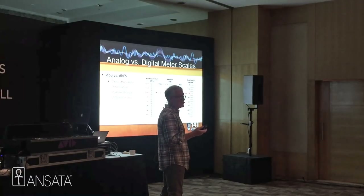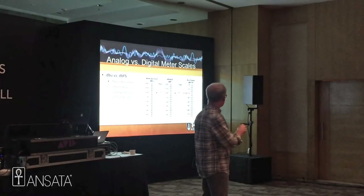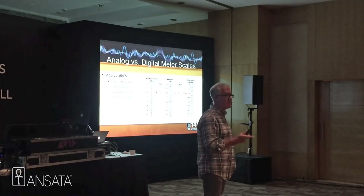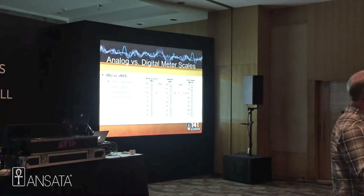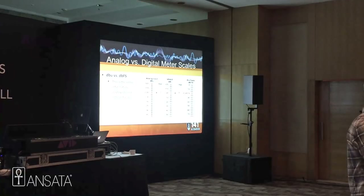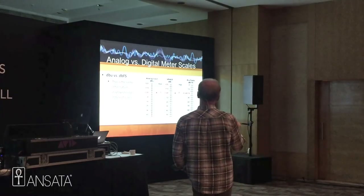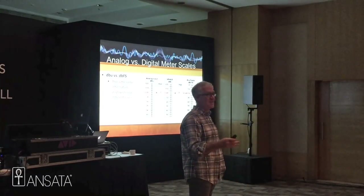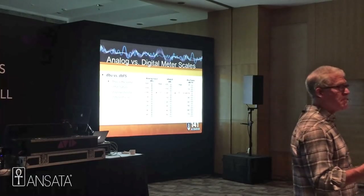Line-level is at minus 20 DBFS for Pro Tools, but it's not the same for every digital manufacturer. For Yamaha, for instance, it's minus 18. So you have to know — it's important to know. All three meter types are just showing the same thing in a different way. Each one of them are showing it in a different way.